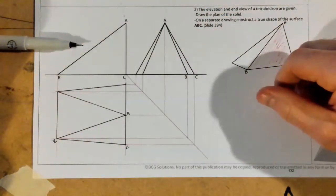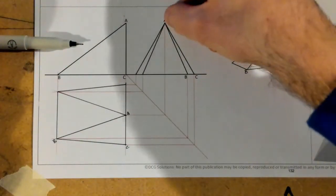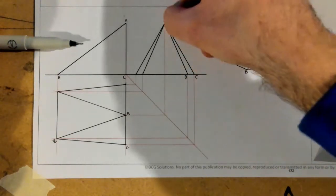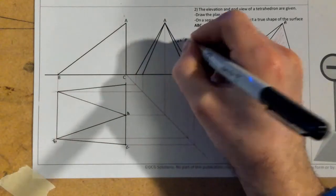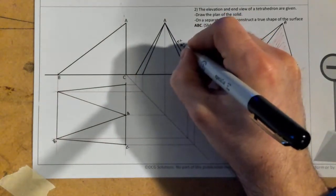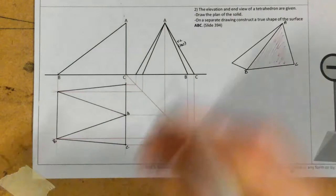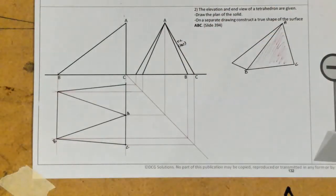Which means when I'm looking straight at it in this direction, in this direction here, that means that the line A to C in my end elevation, which is from here to here, that is actually my true length of the line A, C. So I'll just write in that there, true length A, C. So that is one of the lines that I'm going to need, starting off.